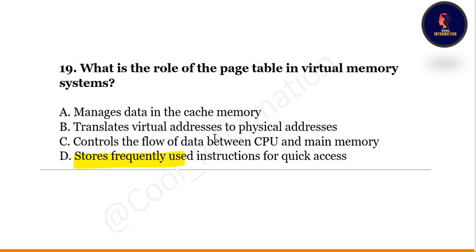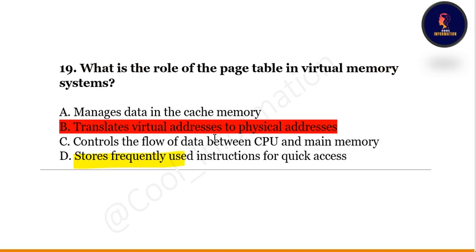Next question: what is the role of the page table in a virtual memory system? Option A: manages data in the cache memory. Option B: translates virtual addresses to physical addresses. Option C: controls the flow of data between CPU and main memory. Option D: stores frequently used instructions for quick access. The correct option is B — translates virtual addresses to physical addresses.